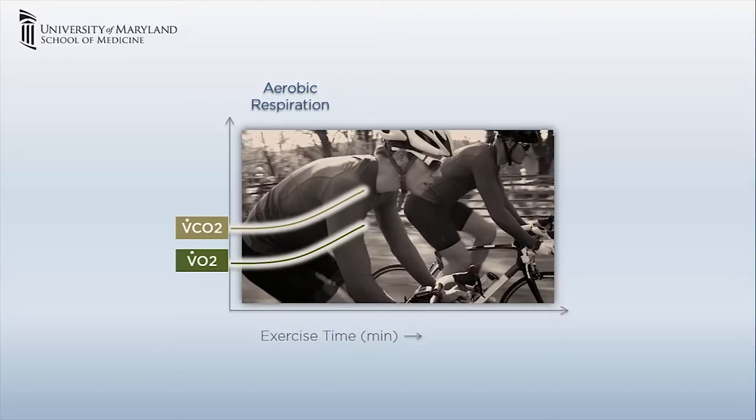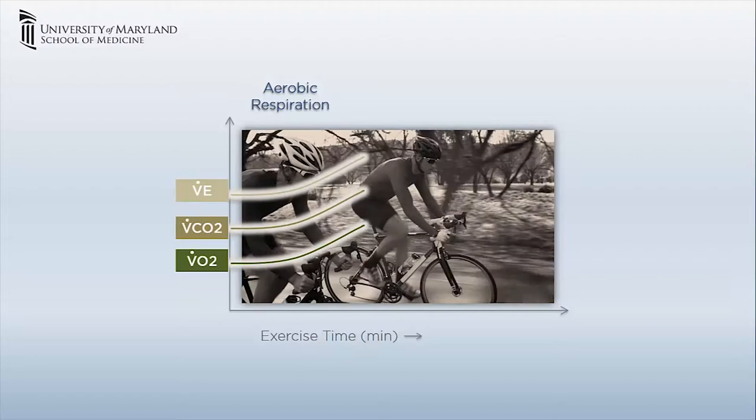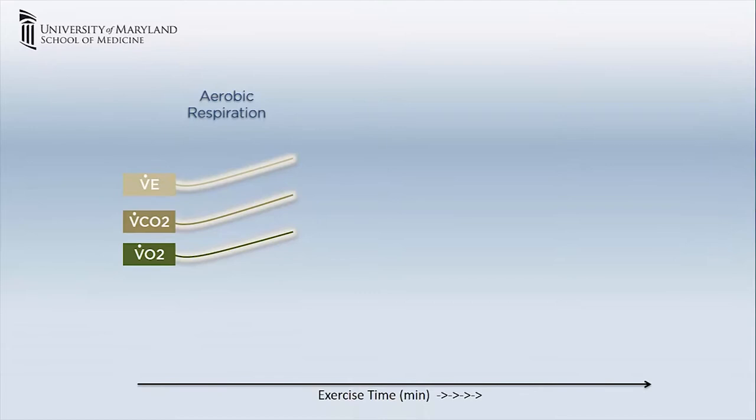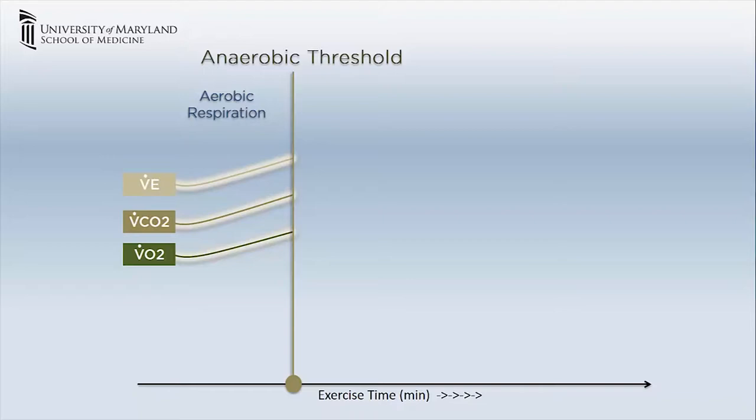When the anaerobic threshold is reached, anaerobic metabolism starts to supplement aerobic metabolism in energy production. Initially, the rise in lactate does not result in acidosis due to the buffering capacity of the body, and the pH remains normal. This is the phase of isocapnic buffering.